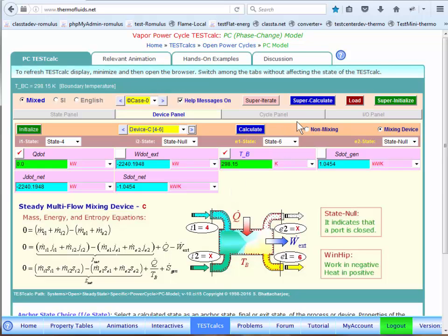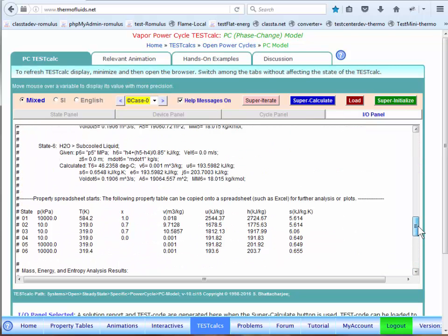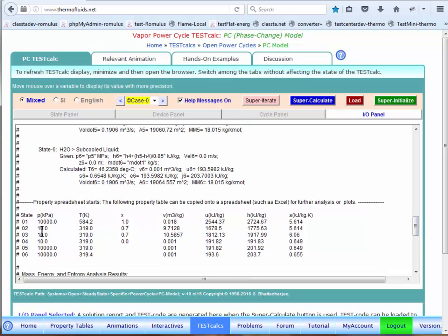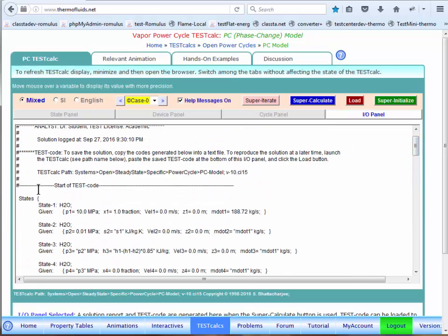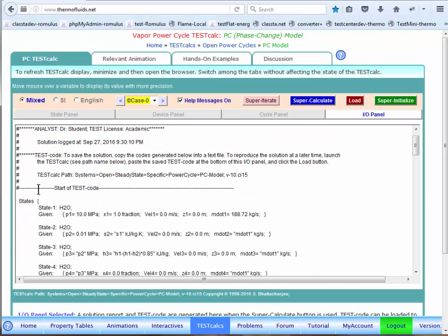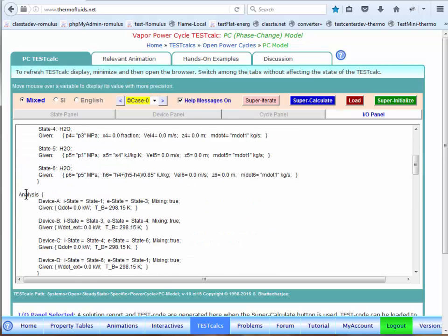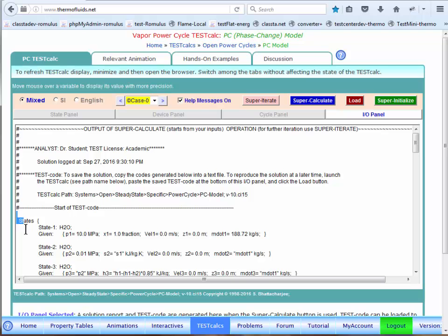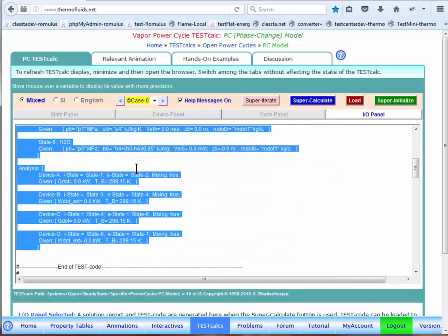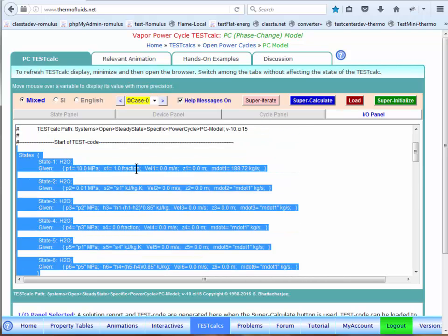Any question that is asked, all the answers are there. Notice that because we click the supercalculate button, a detailed output is generated here. This is a table of properties that can be exported to an Excel sheet. All the states are calculated, devices are calculated, and the test code is right here. So, all our work is preserved here, except you have to copy and paste it, keep for your own record. If I copy this solution, I can come back later on and just paste the solution right here, and click the load button to regenerate the solution.